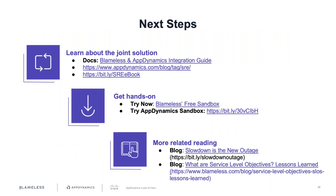Resources are shared for further learning. Marco will post links in the chat about research cited, including his blog on 'Slowdown is the New Outage' and the 100-milliseconds-to-1%-revenue relationship. Dylan recommends the Blameless 'Service Level Objectives: Lessons Learned' article, which documents what Blameless learned by dog-fooding their own application and process. There are many great points for teams whether new to SLOs or already experienced.